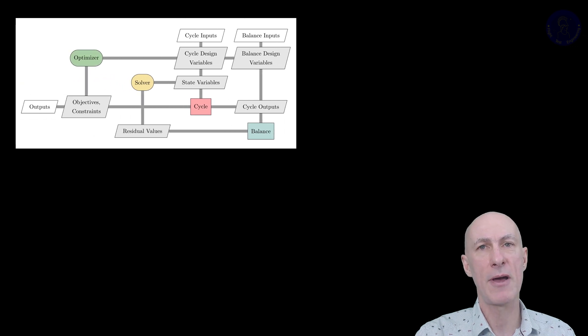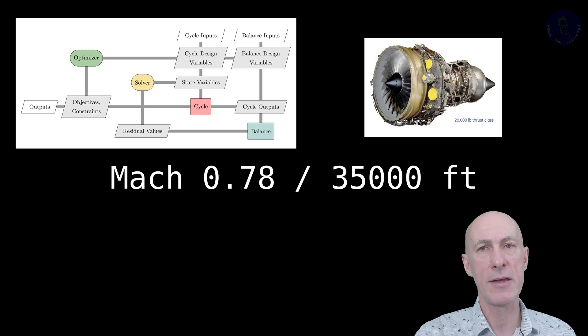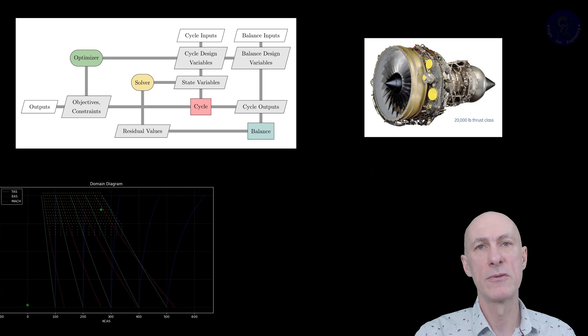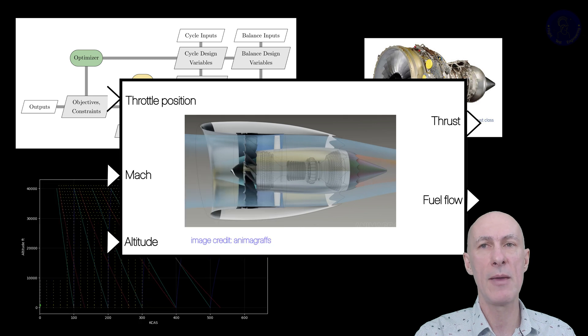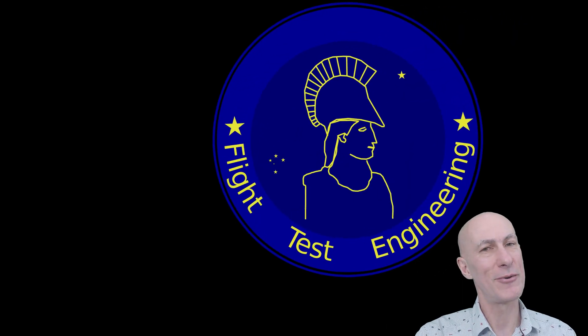In the series, we'll look at the basics of PyCycle, look at the engine we are trying to model, set the design and off-design points, run PyCycle and produce tons of data, and then create our engine deck API that will return engine data when given the flight conditions. We start on the next episode, looking at the engine. I'll see you there!